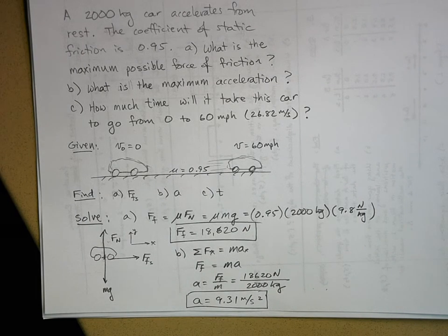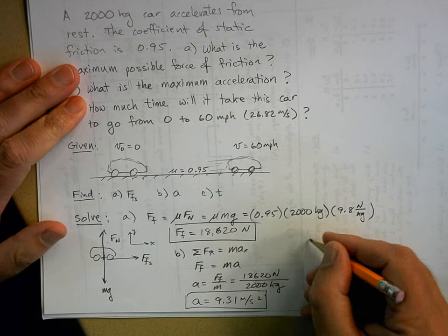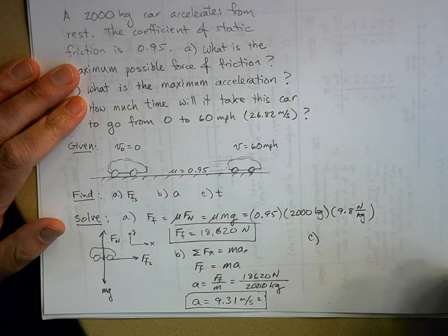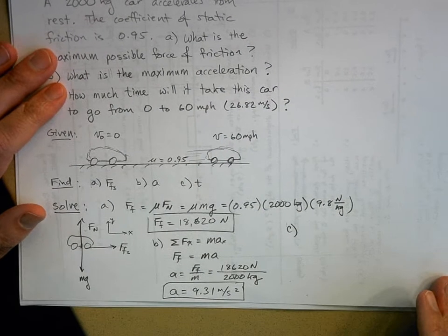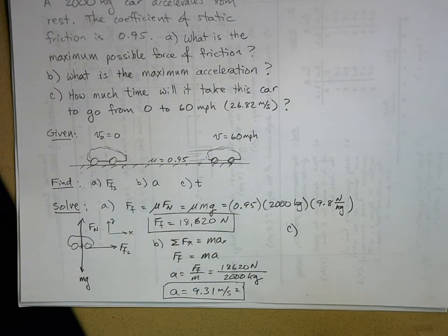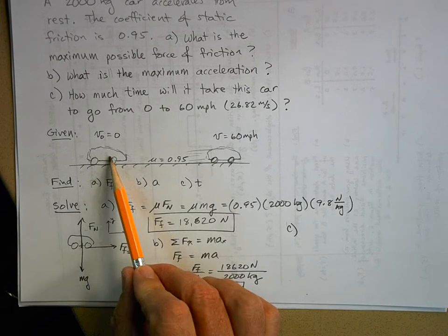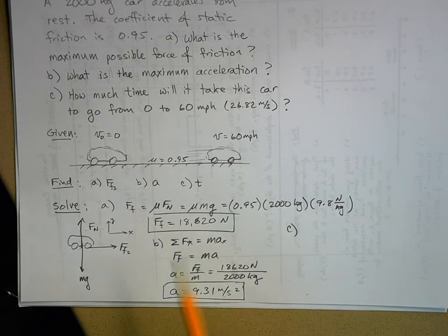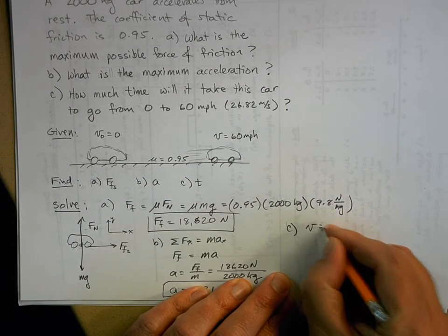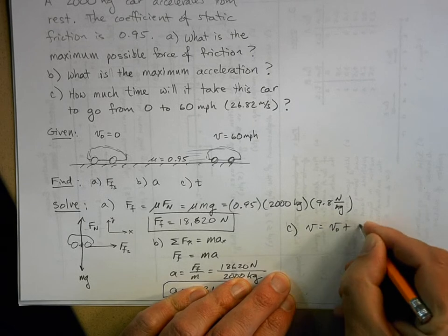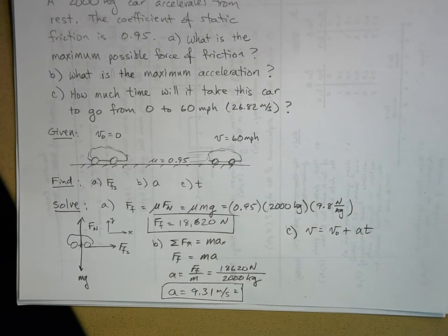And then we want, for part C. Well, what do we know? We know the acceleration. We know the initial velocity and the final velocity. And we want time. So what has those four things in it? The first kinematic equation.